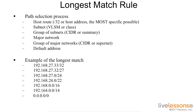Now finally, if I am going to try to go to the network 10.0.0.0, I have to use the default address because that address is not listed in my routing table.